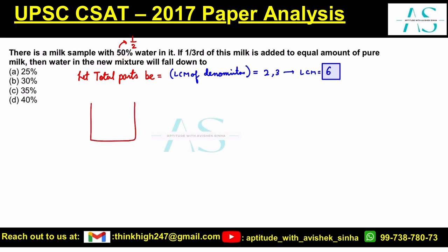The first milk sample has 50% water. In this sample, there are both milk and water — M for milk, W for water. Total parts is six. It is 50% water, so six parts of 50% gives three parts. So three parts is water and three parts is milk.